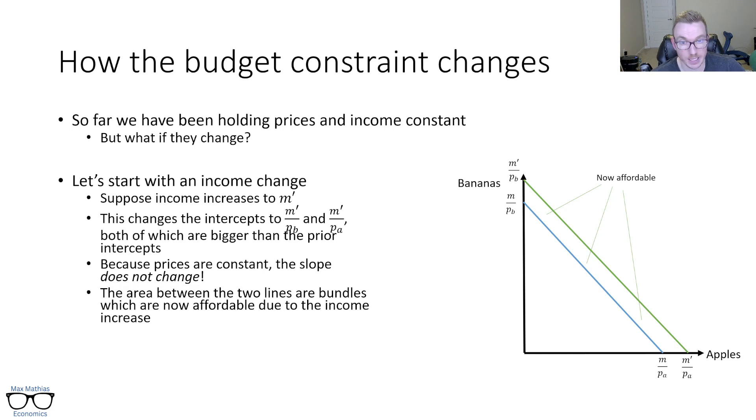On the other hand, if for some reason my income decreased, it would just be a leftward shift. So if you imagine going from the green to the blue, those are now bundles that are unaffordable. So the logic is just flipped for if income falls. So as I said, income changes are parallel shifts of the budget constraint. The reason for that is prices are not changing.